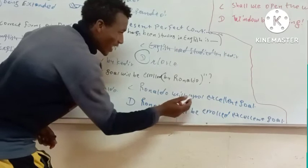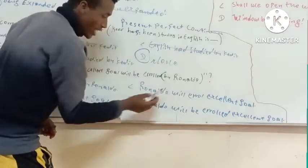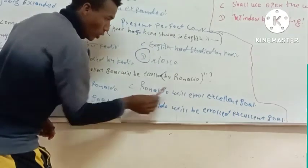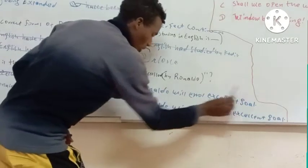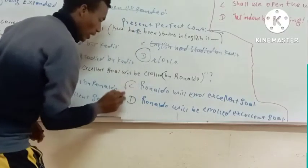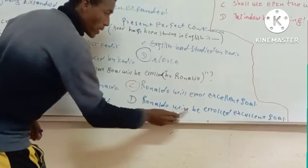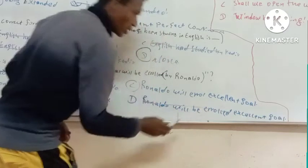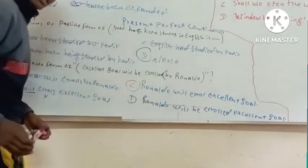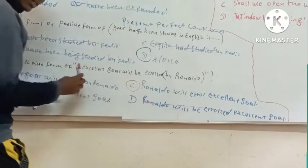The correct active form is: 'Ronaldo will roll excellent goal.' Option C) 'Ronaldo will roll' is the correct active form. Option D 'Ronaldo will be...' is passive because it follows the passive formula.